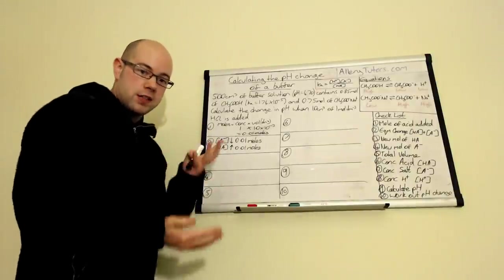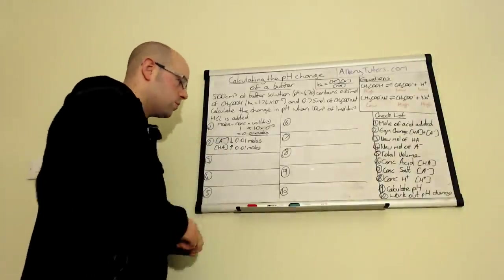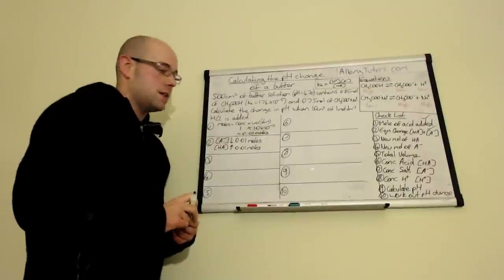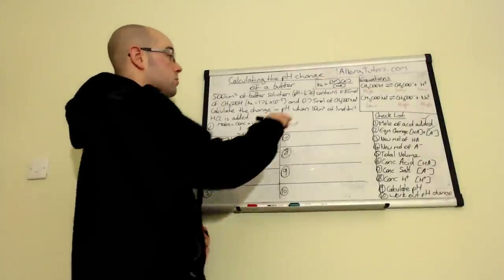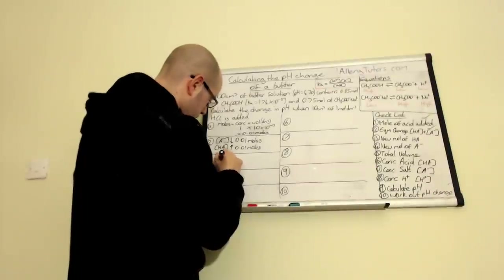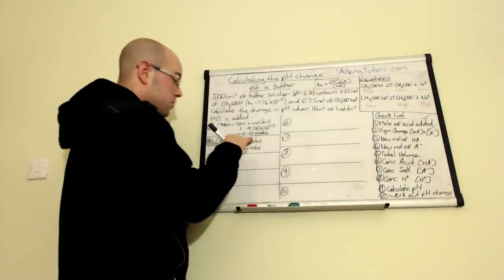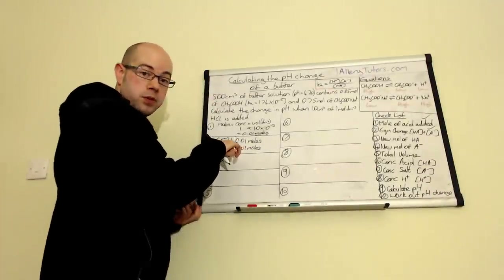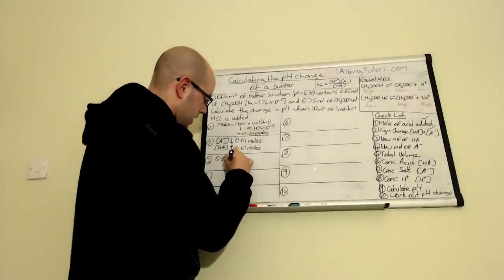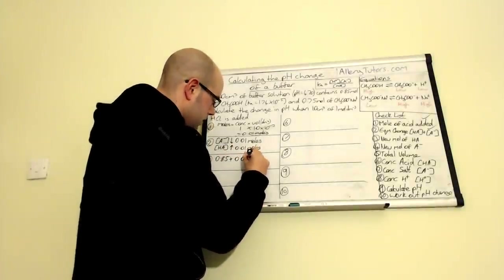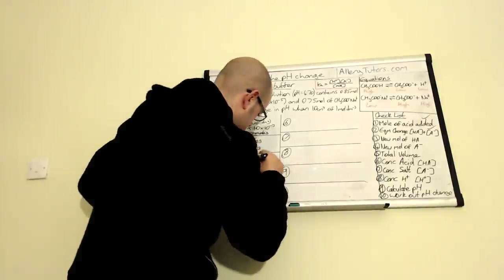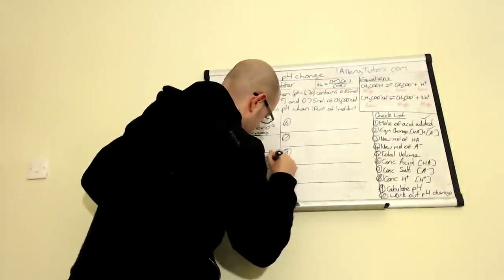Now we've worked out the changes at equilibrium, we need to work out the new number of moles of acid — that's step three. Our original moles of acid were 0.85. Since we've produced a little more ethanoic acid by adding the strong acid, we add 0.01 to get new moles of acid: 0.85 + 0.01 = 0.86 moles of acid.